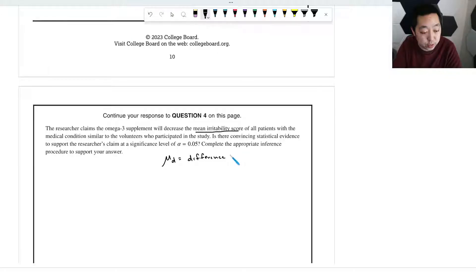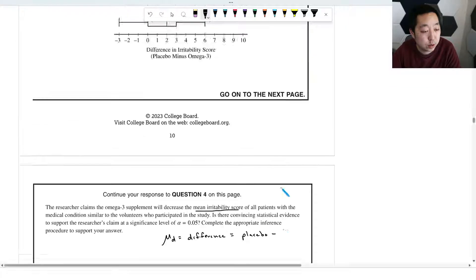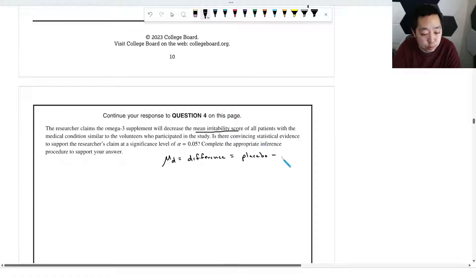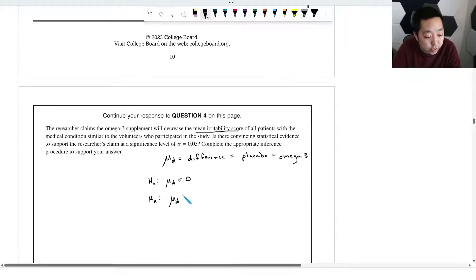We'll say mu_D is the difference in the scores, which equals placebo minus omega-3. And so our null and alternative hypothesis - we'll assume that there is no difference and we want to prove whether or not it will decrease it. We want the placebo irritability to be higher, so we want it to be positive because we want this omega-3 number to be smaller. So this is a matched pairs t-test.